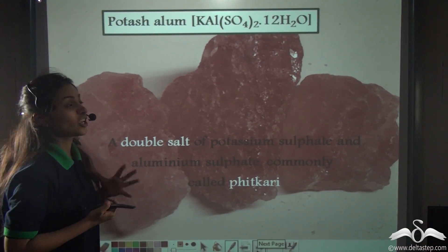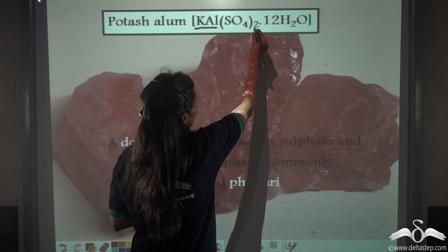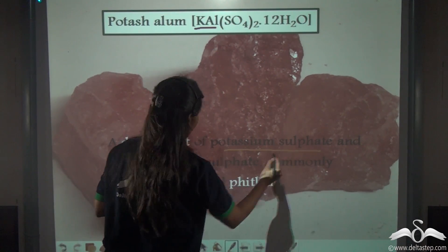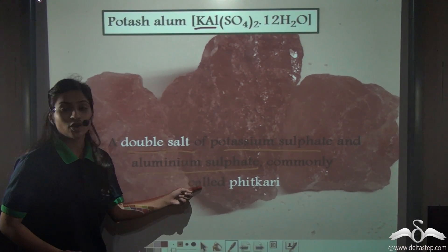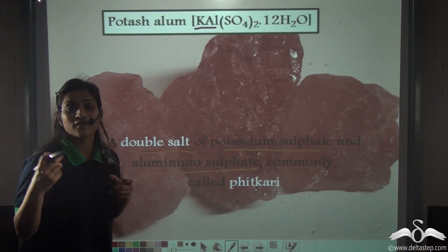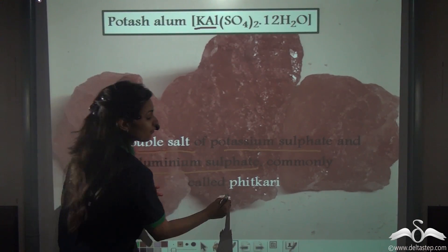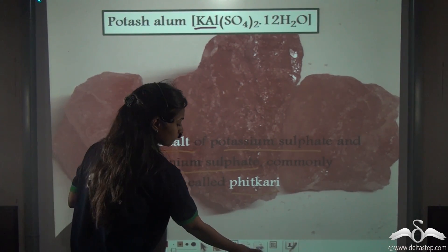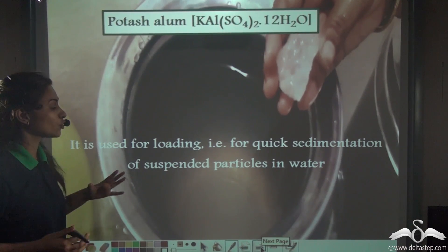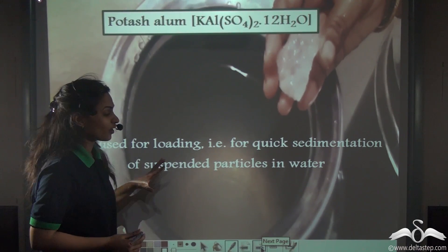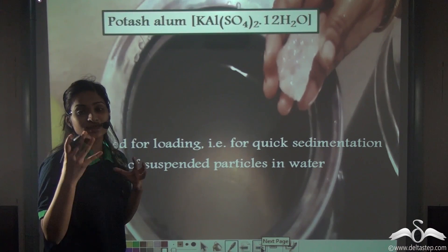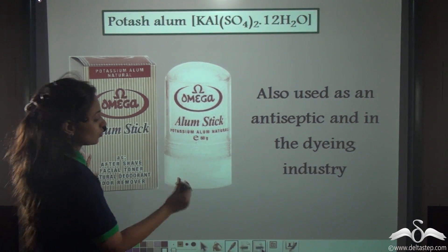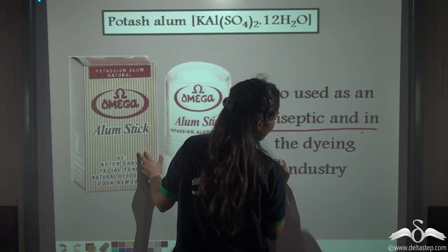Next we have potash alum, KAl(SO4)2.12H2O. This is a double salt of potassium sulphate and aluminium sulphate and is commonly called phitkari. You may have seen your grandparents or neighbours dissolving it in water to purify water. It is used for flocculation — meaning quick sedimentation of suspended particles in water. It is also used as an antiseptic and in the dyeing industry.